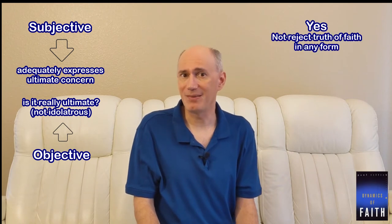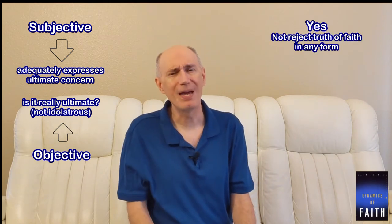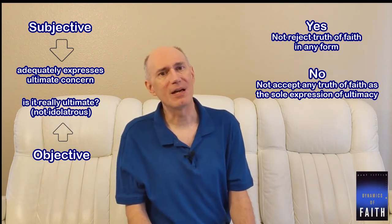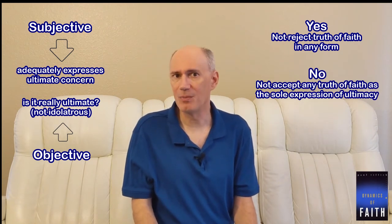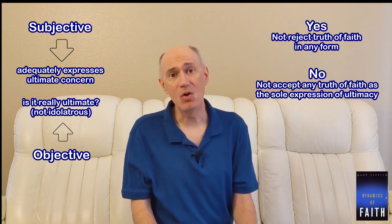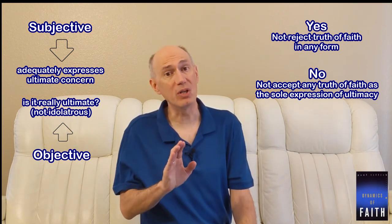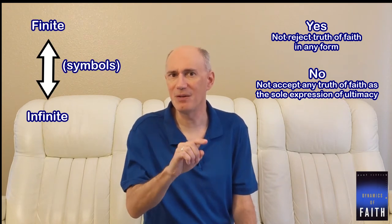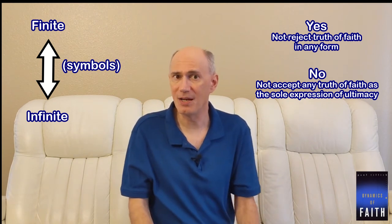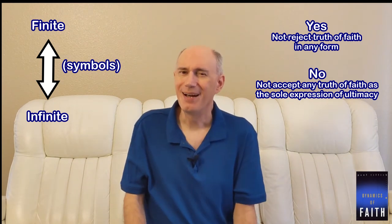The criterion contains a yes — it does not reject any truth of faith in whatever form it may appear — and it contains a no, meaning it does not accept any truth of faith as ultimate except the idea that no one person or religion solely possesses it. This is because we are never able to bridge the infinite distance between the finite and the infinite from the side of the finite, which is the side we're all on. Unless, of course, you're infinite — and if that's the case, prove it by stepping right into this room where I'm recording this video!